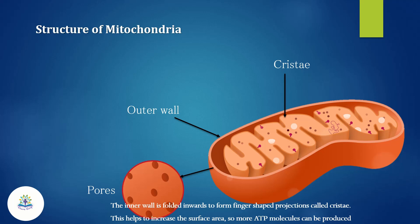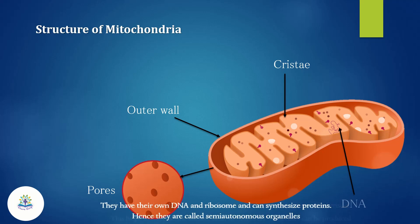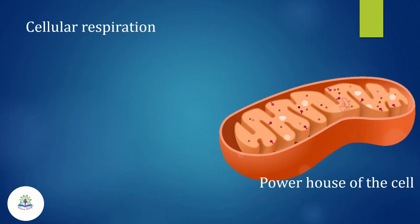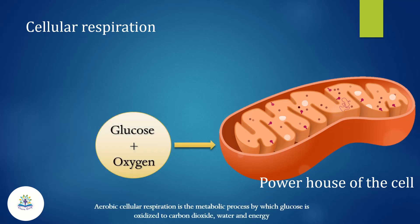The increased surface area means more ATP molecules can be produced. Mitochondria have their own DNA and ribosomes and can synthesize proteins, hence they are called semi-autonomous organelles. Cellular respiration can be aerobic or anaerobic. Aerobic cellular respiration is the metabolic process by which glucose is oxidized to carbon dioxide and water, releasing energy.